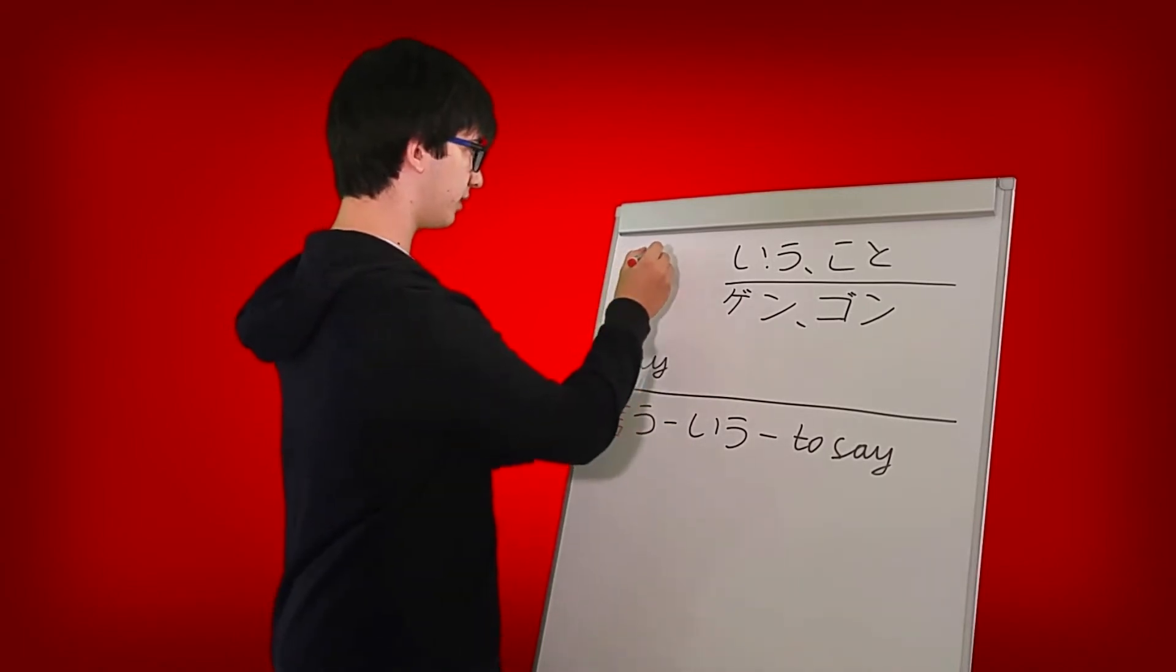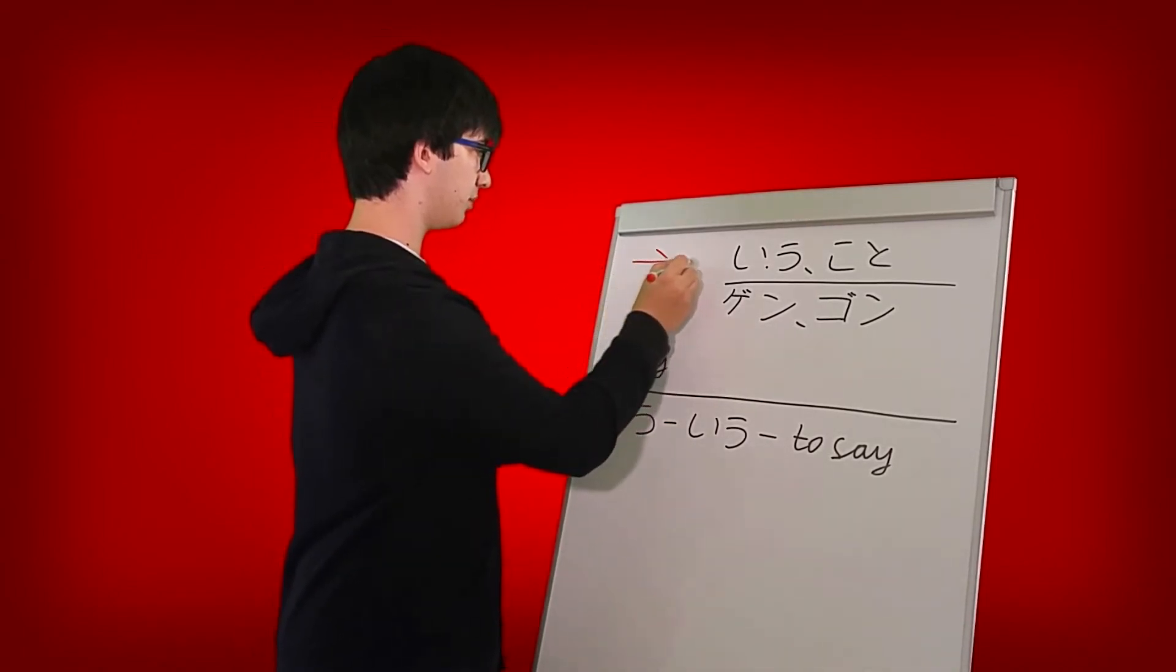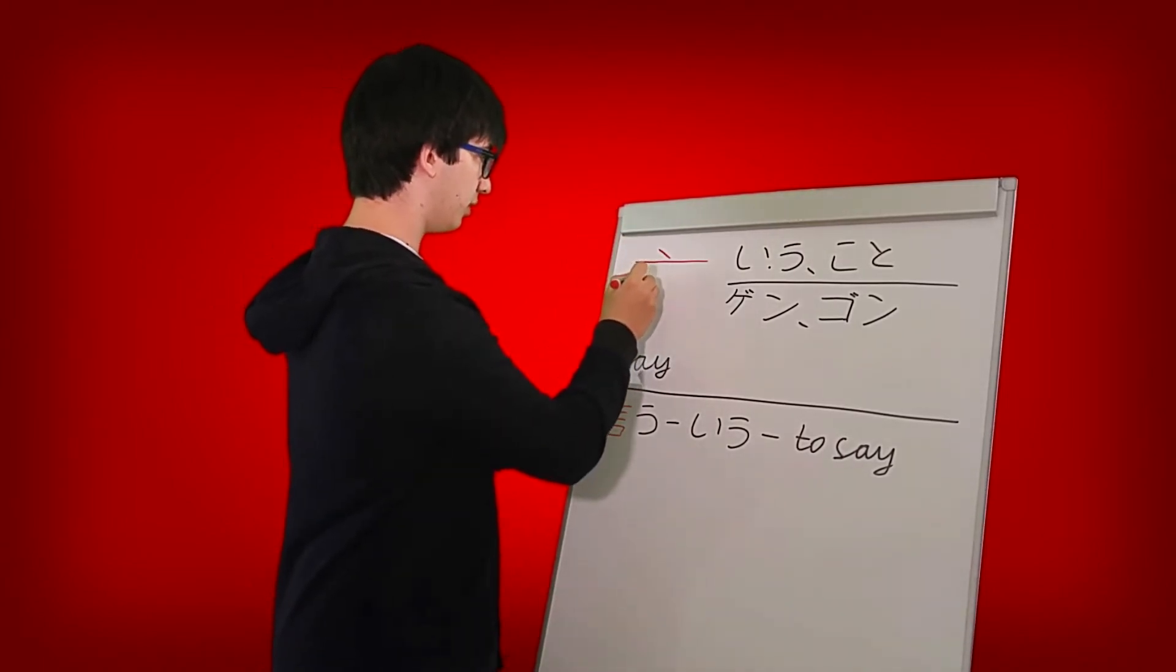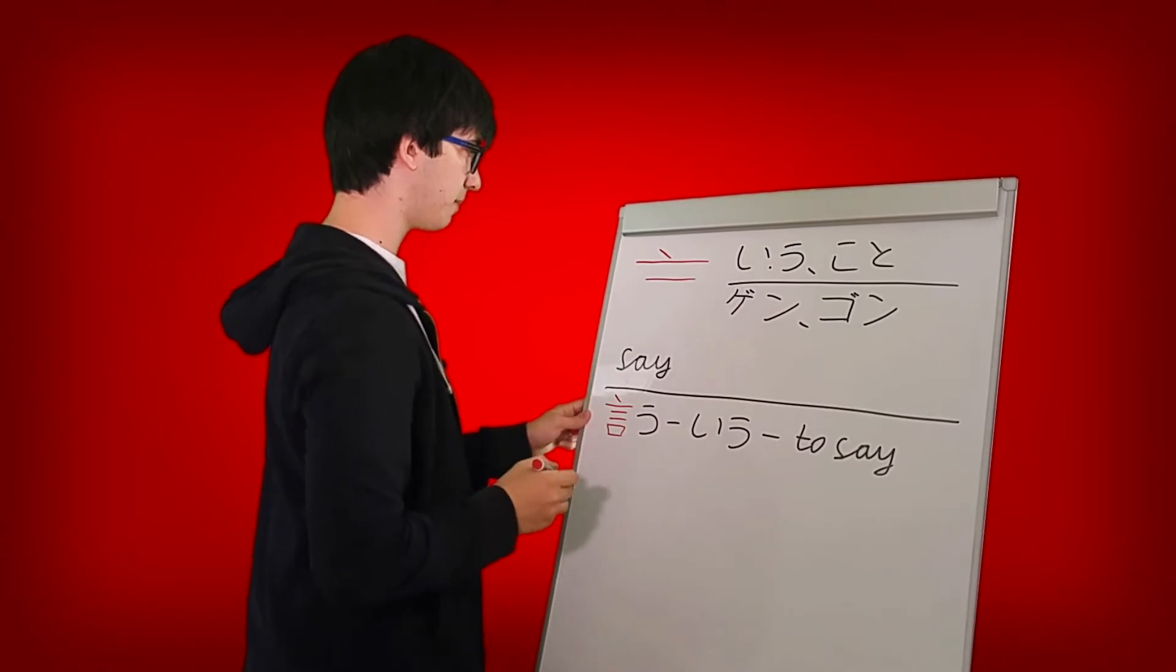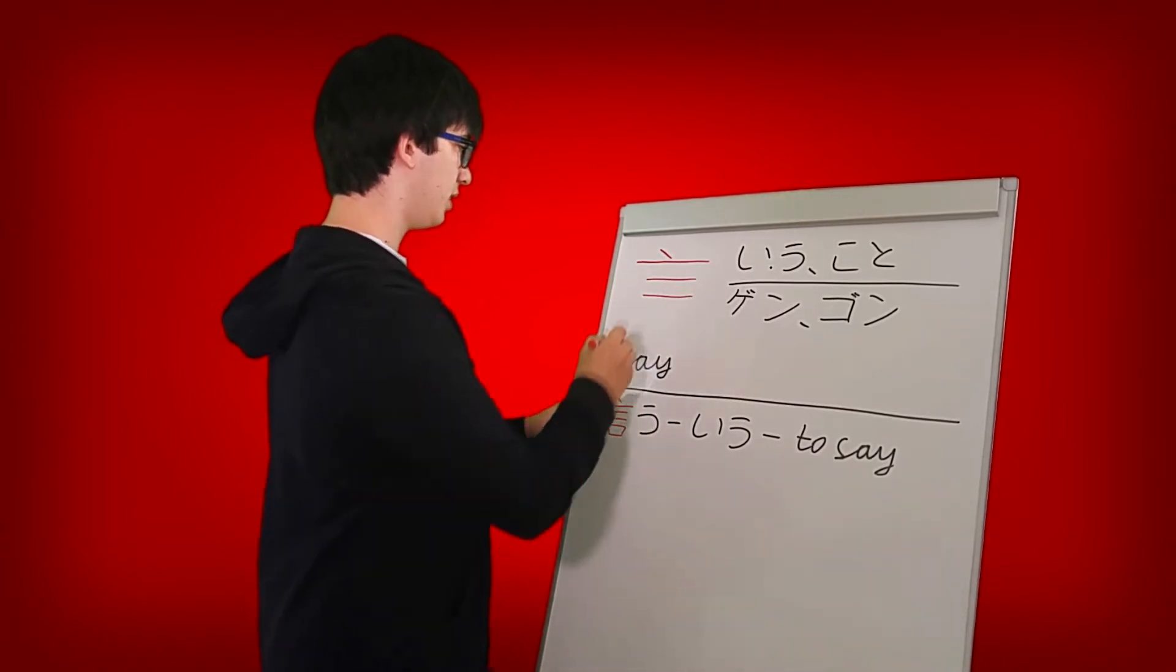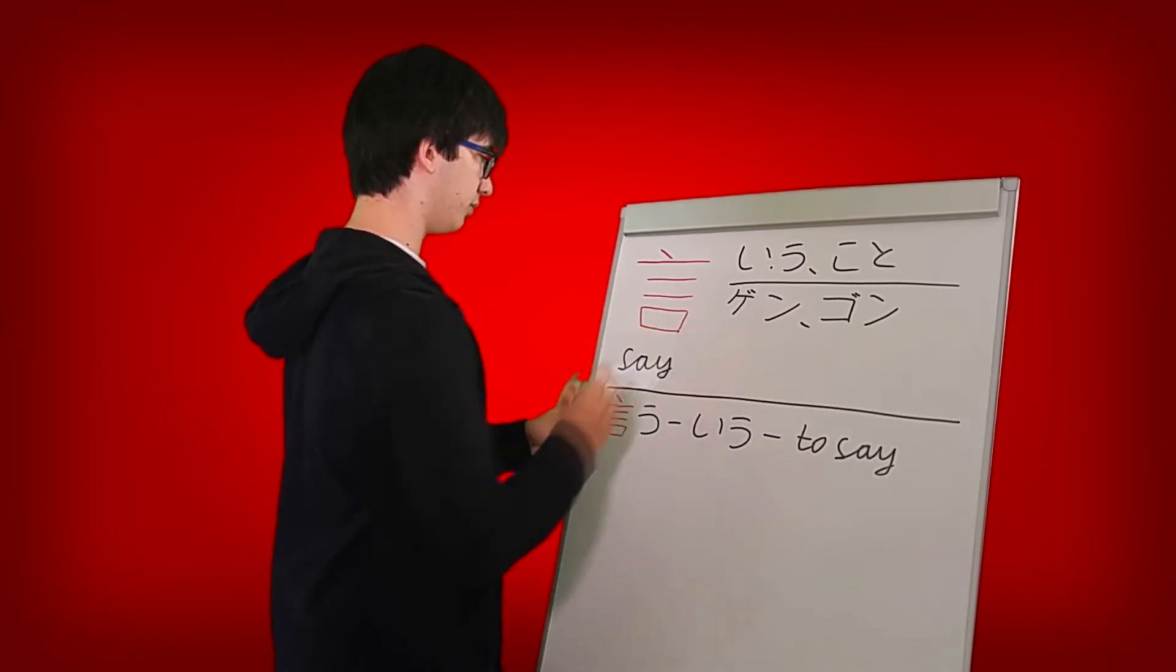So the first stroke goes like this at an angle. The next stroke is gonna be a line like that. These two don't have to be touching. And then you have a line like this and then another line pretty much the same.